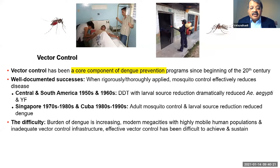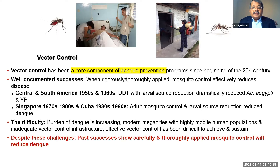The difficulty is that the burden of disease has increased, and there are now much larger cities with highly mobile populations. Our vector control infrastructure in this environment is very limited, and vector control has been struggling — especially for dengue control. Current mosquito control methods, if applied carefully and thoroughly, can reduce dengue.